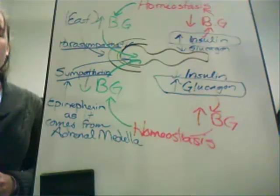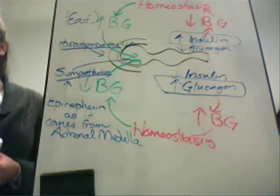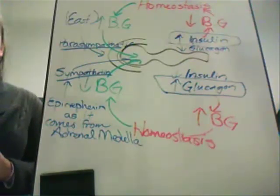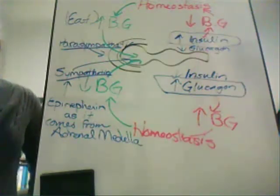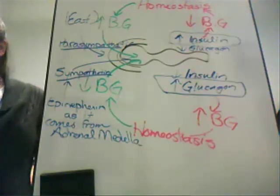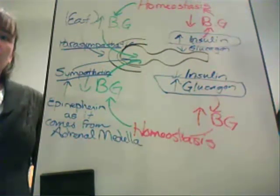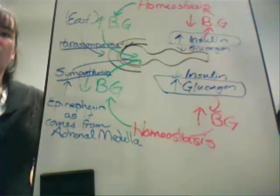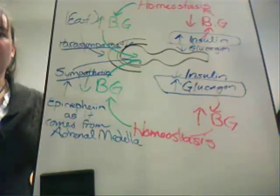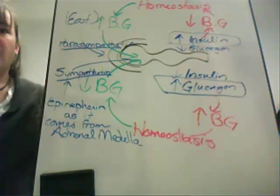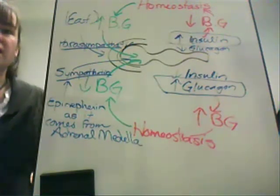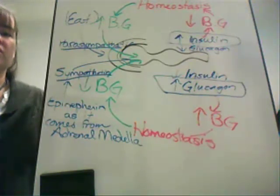Glucagon has opposing effects: it causes the liver to liberate stored glycogen, the complex molecule of glucose. Some adipose tissue and muscle may also liberate fatty acids and glucose into circulation, and glucagon travels directly to the liver from the pancreas. When you get hungry, it is an insulin action on the hypothalamus. Polyphagia refers to hunger associated with high blood glucose; polydipsia refers to elevated thirst; and polyuria refers to increased urine production.